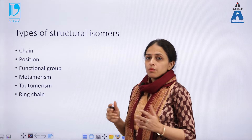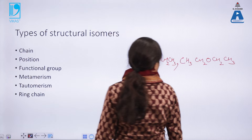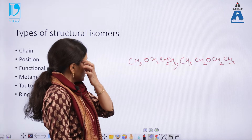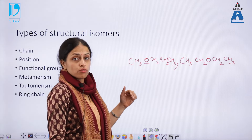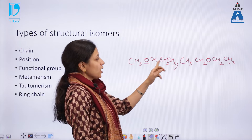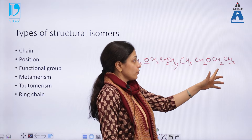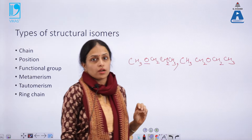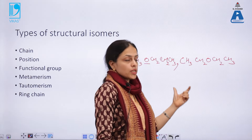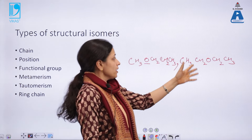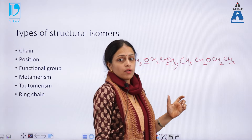The fourth type of structural isomers are metamers. The two structures here represent ethers. In the first structure, there are three carbon atoms on one side of the oxygen atom and one on the other side, whereas in the second structure there are two carbon atoms on either side. The difference in the number of carbon atoms on either side of the functional group is what defines metamerism.